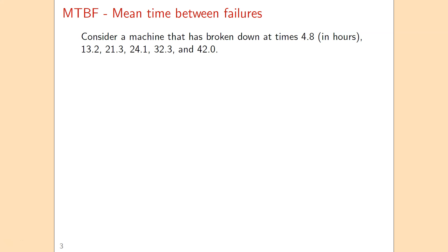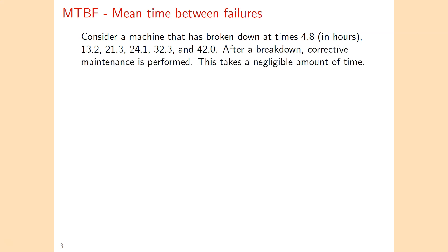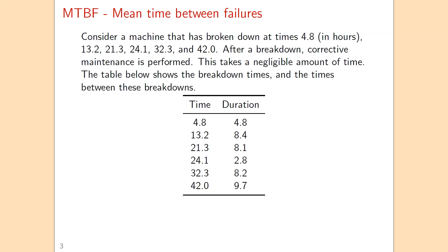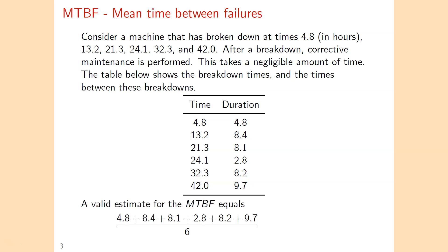Let's start with a very simple example. Here we have a machine that has broken down six times in the past — first time after 4.8 hours. After such a breakdown we do corrective maintenance immediately, assuming it takes negligible time and makes the machine as good as new. The second failure occurs at time 13.2, so the duration is 8.4 hours. We obtain six times until failure, and taking the mean of those six durations gives 42 divided by 6, which is 7 hours — our estimate for the mean time between failures.